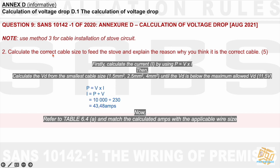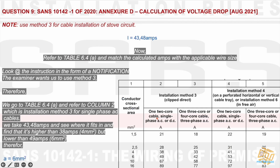The second question is to calculate the correct cable size to feed the stove and explain the reason why it is the correct cable. Firstly, calculate the current using P = VI. Then calculate the voltage drop starting from the smaller size — 1.5, 2.5 — until the voltage drop is below the maximum allowed voltage drop of 11.5V. We calculate I and find 43.48 amps. Refer to table 64A and match the calculated amps with the applicable wire size.